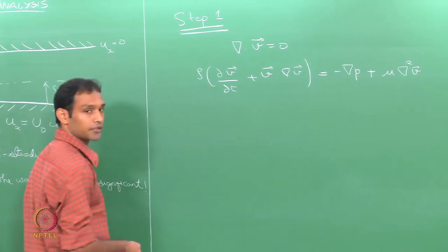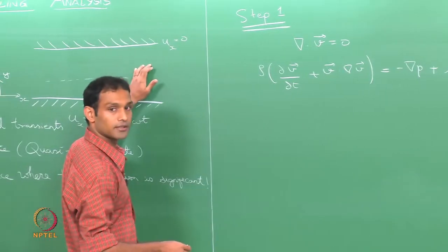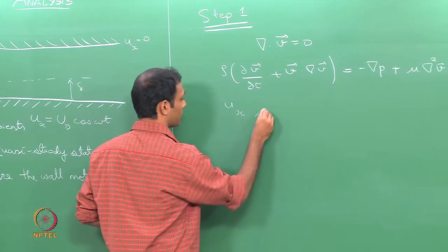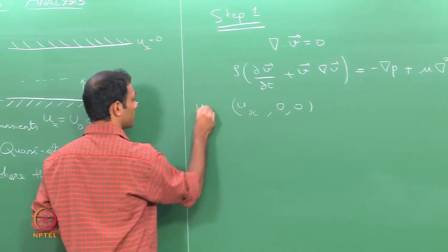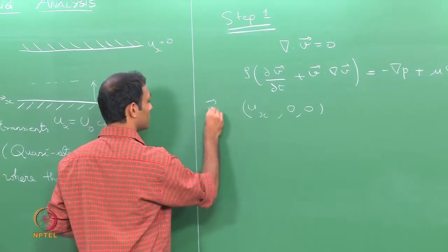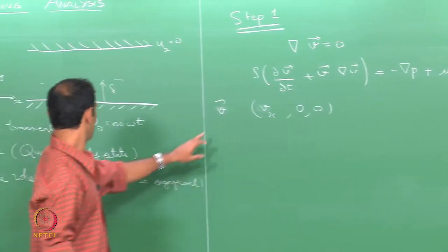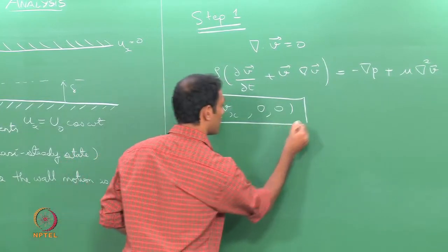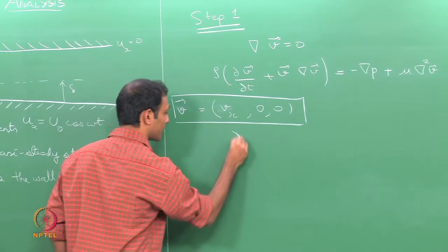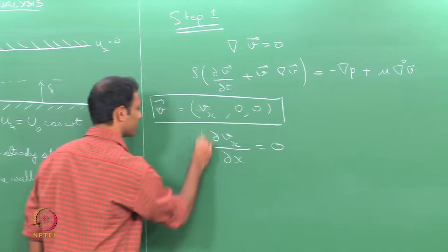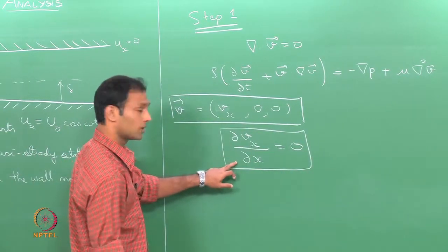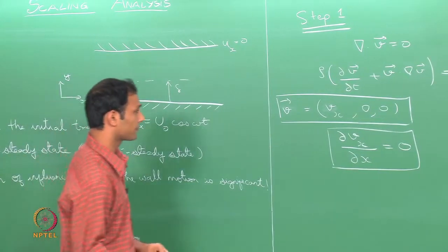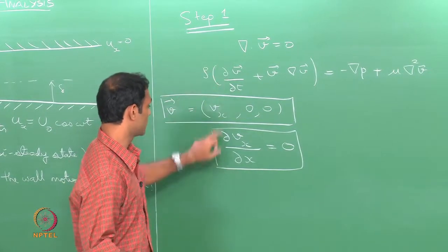We write it in expanded form for the 3 directions. We fundamentally assume the flow is 1-dimensional so we only have an x component of velocity — ux — and uy and uz are 0. If I substitute this into the continuity equation, I get that ∂vx/∂x = 0, which means the flow is fully developed: whatever we have at one x point is the same as at any other x.